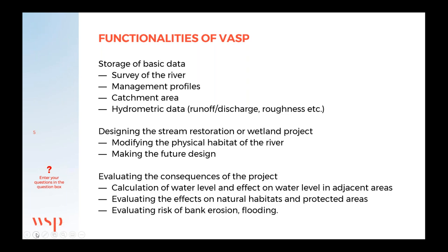There are built-in tools where you can modify the physical habitat of the river as it is now or design the future wished state of the river. You can then evaluate the consequences of this project — you can calculate the water level in the river but also the effect on the water level in adjacent areas, for example in natural habitats, and evaluate whether they will be benefited or harmed by these changes.